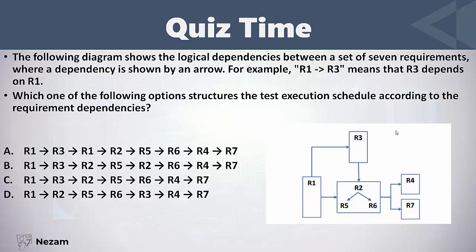In this example we have seven requirements and we want to create the test execution schedule based on the dependencies between them. Let's look at the diagram and search for the requirement that is not dependent on any other. We find that R1 is not dependent on any other requirement. R3 and R2 both depend on R1. If we look at R2, it is inside a module consisting of R2, R5, and R6, so R2 depends on both R1 and R3 — there is an arrow from R1 to R2 and also from R3 to R2.